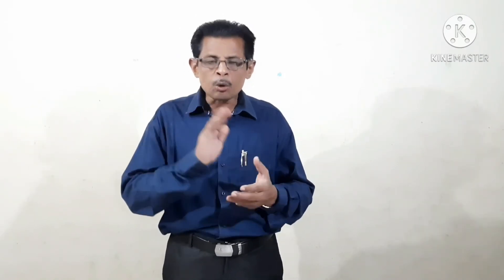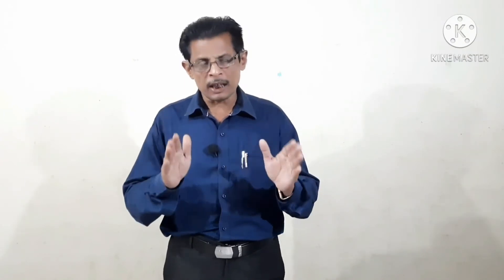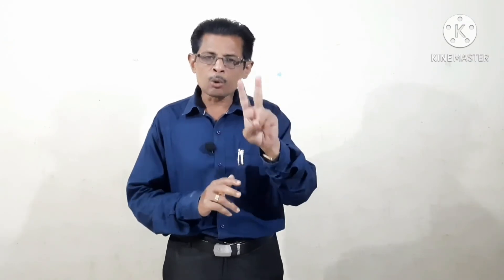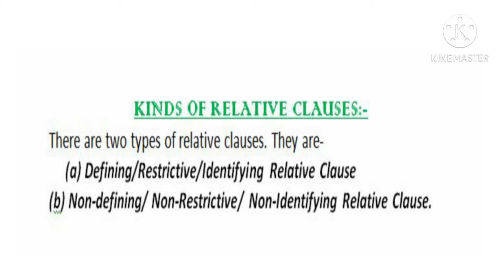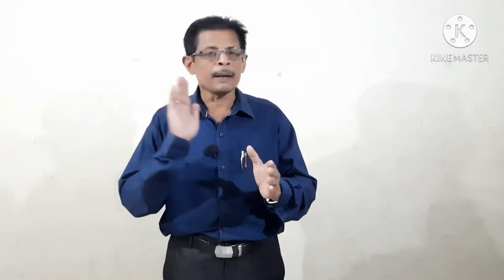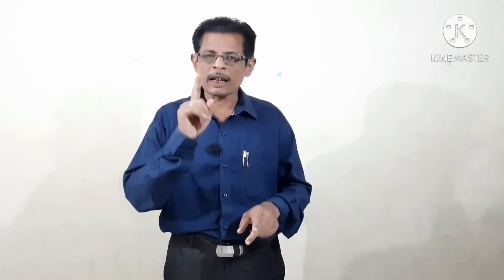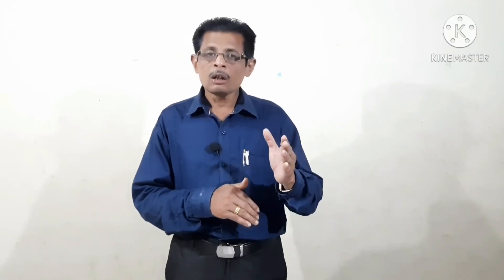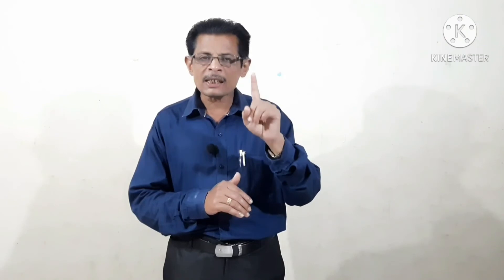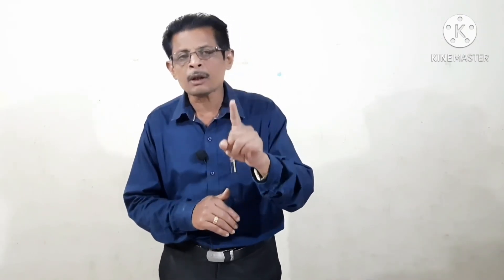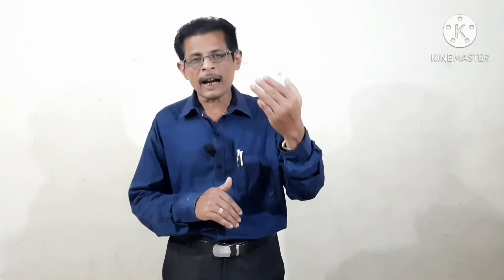In today's discussion, I will also discuss about kinds of relative clause. There are two types of relative clauses: defining relative clause and non-defining relative clause. Defining relative clause has three names: defining relative clause, restrictive relative clause, or identifying relative clause. The second type is non-defining relative clause, also called non-restrictive or non-identifying relative clause. Now I will discuss only about the first type — identifying relative clause. In part two, I will discuss about the non-identifying relative clause.